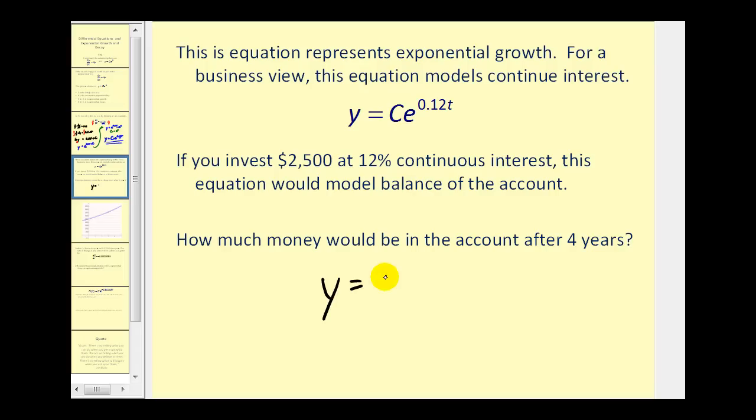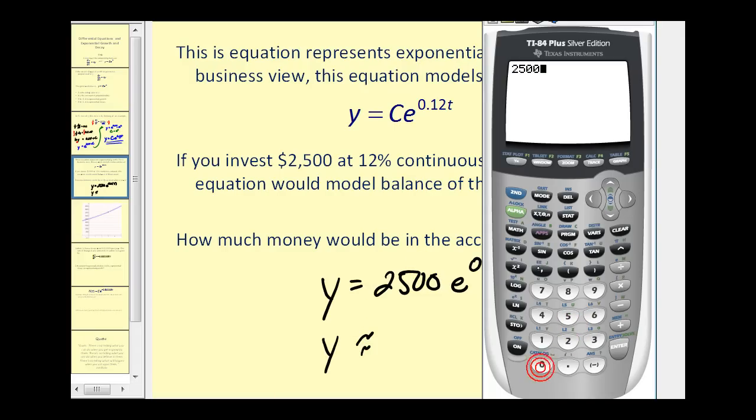We would have y equals 2,500 times e to the power of 0.12 times t which is four, and y would be the balance of the account. So we'd have 2,500 second natural log brings up e, 0.12 times four. The balance of the account would be $4,040 and roughly 19 cents.